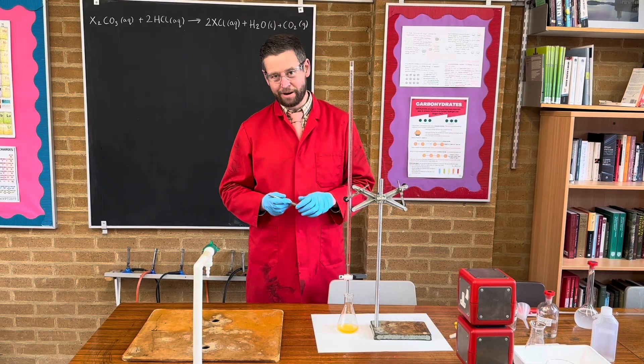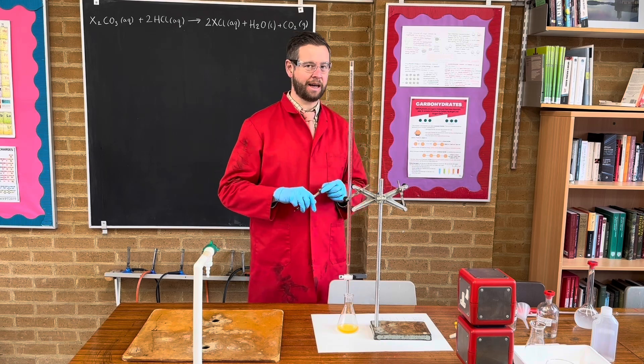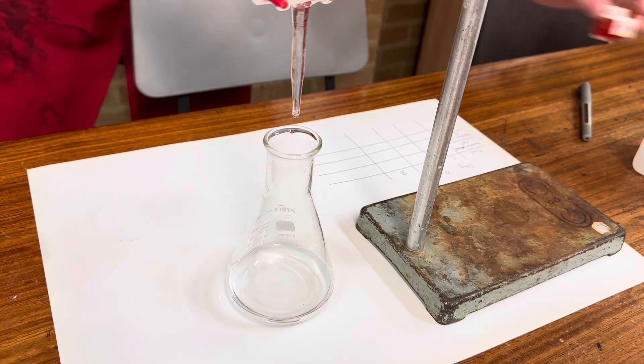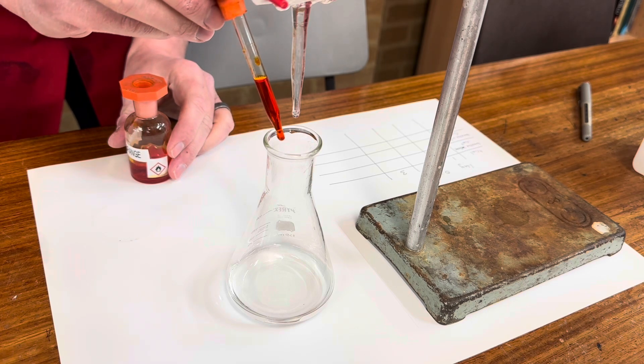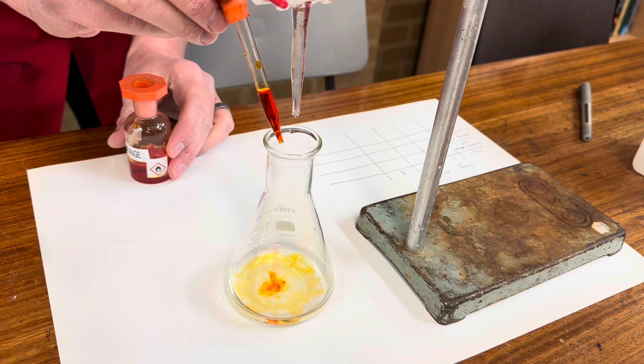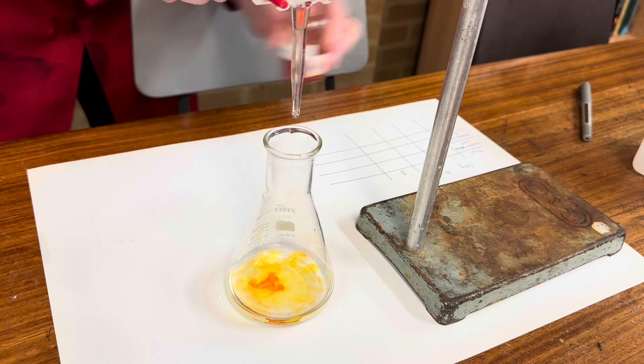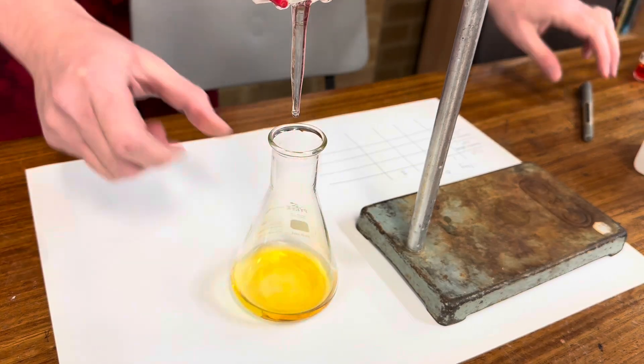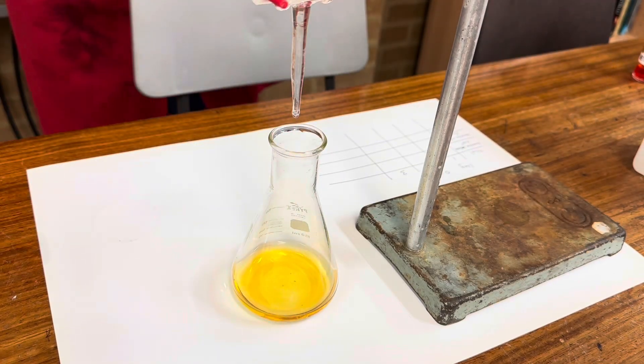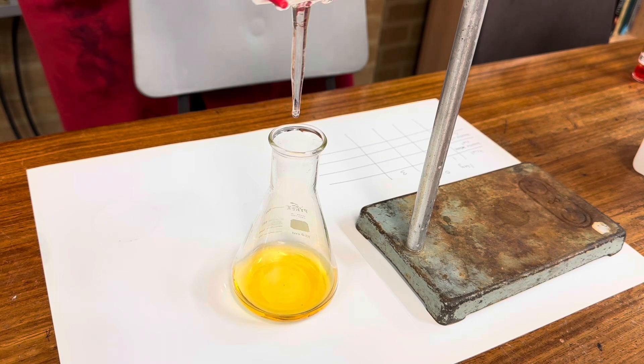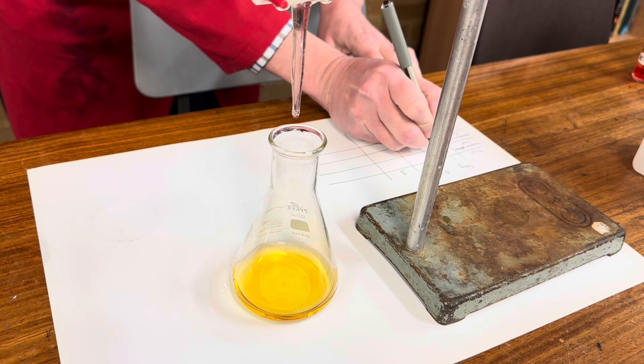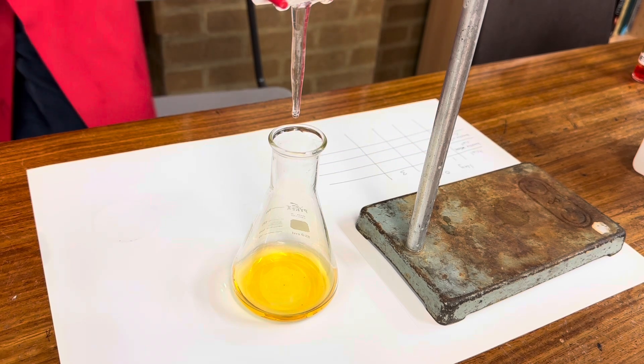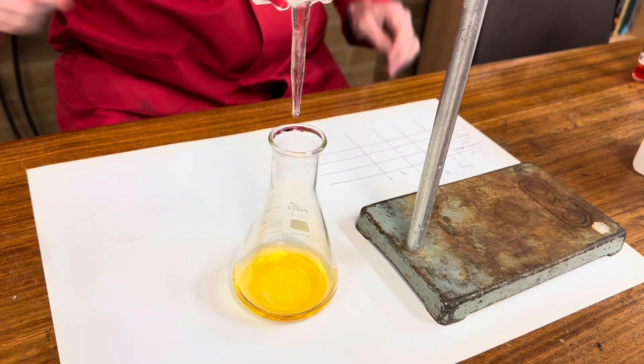Preliminary try over. We're now ready to do our first run. We'll add to this three drops of methyl orange. Give it a swirl. And record our first volume, which on this is 0.60. Let's titrate.